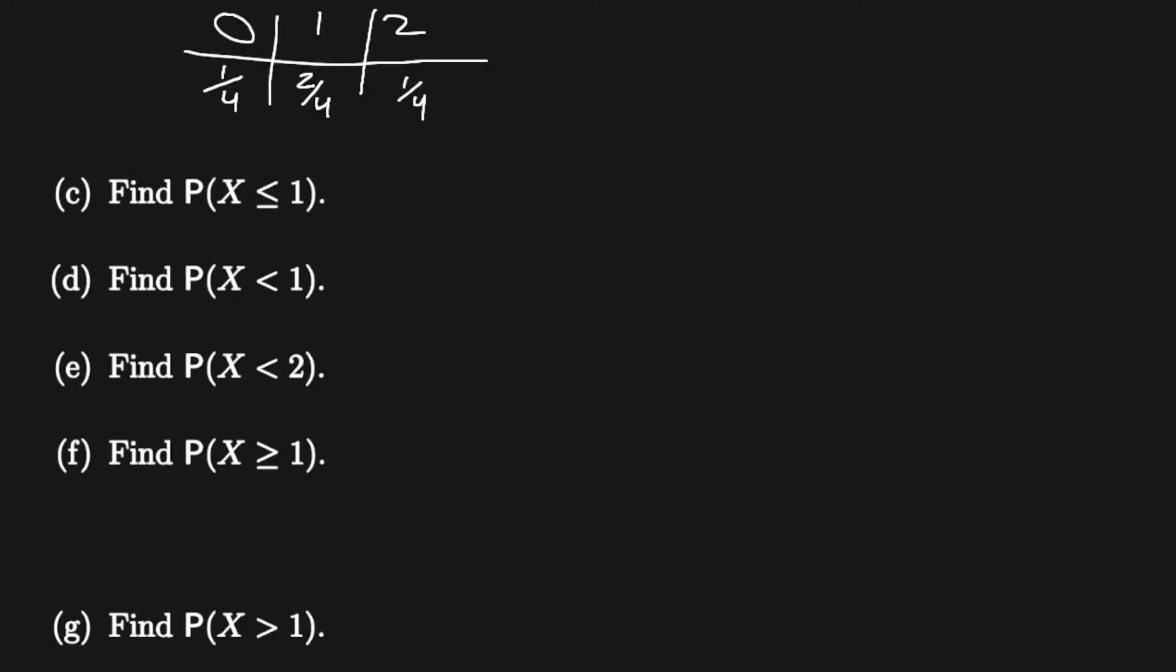Now we can move on with the rest of the problem. Part c is asking for the probability of X less than or equal to one, which is the probability of X equals zero plus the probability of X equals one. Now we can see that is one fourth plus two fourths, which is three fourths.